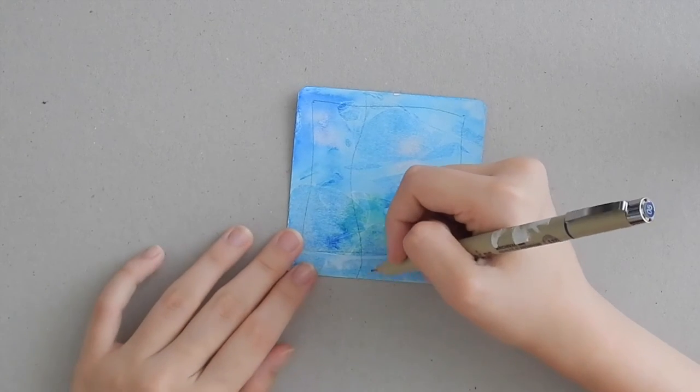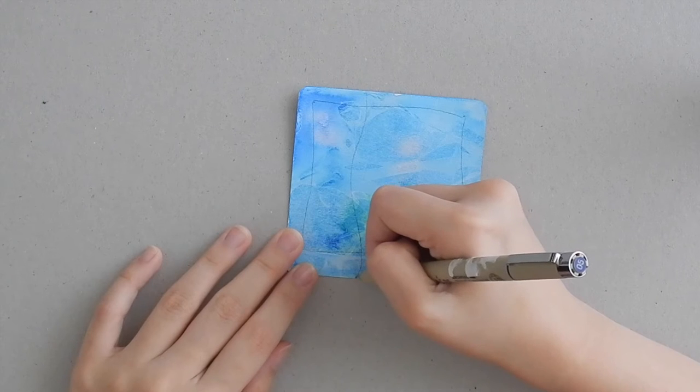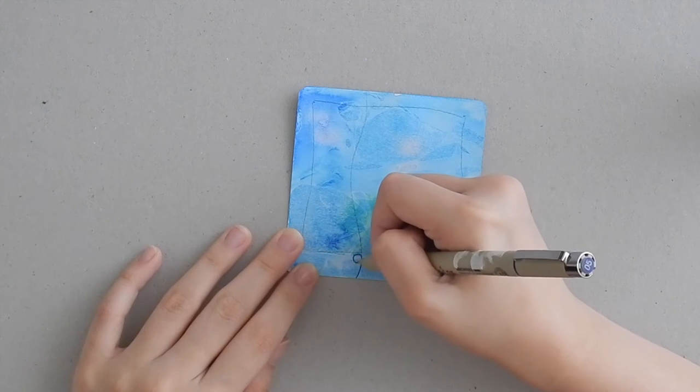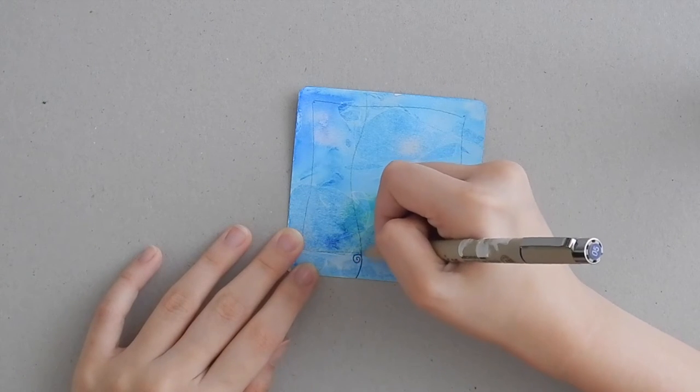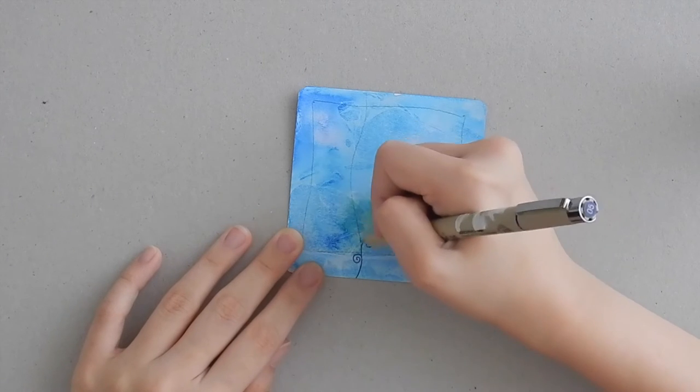Starting from one edge of the tile, we're going to draw a curvy line with a curl at the end of it. You're following the string that you've drawn, drawing along your string.